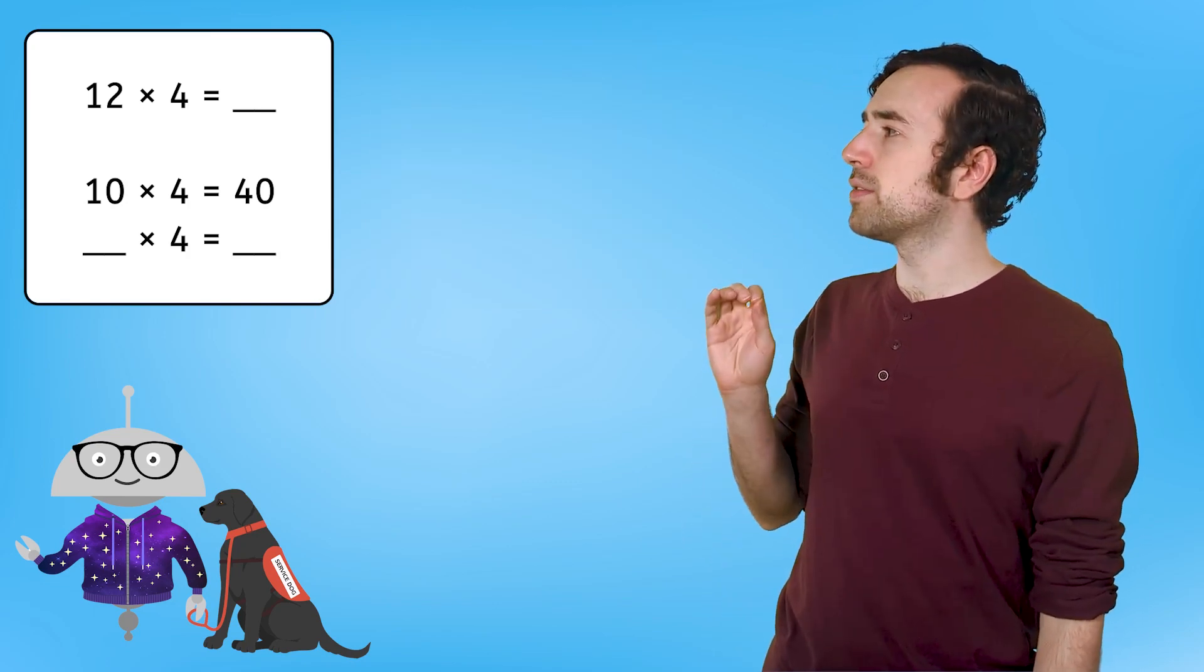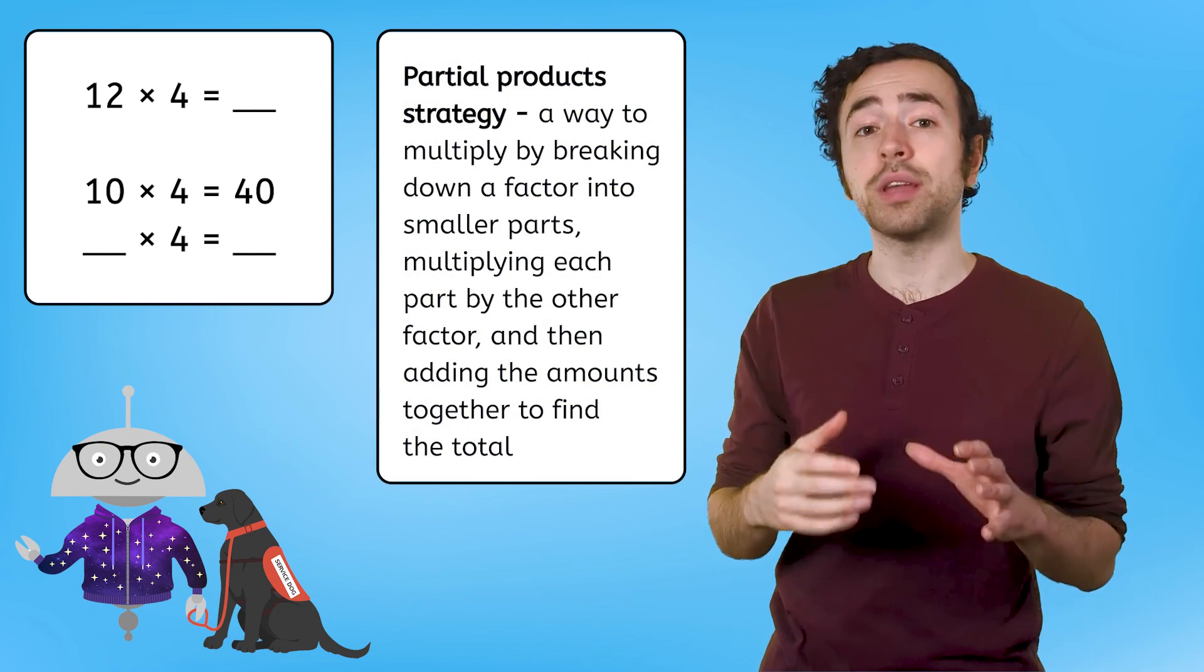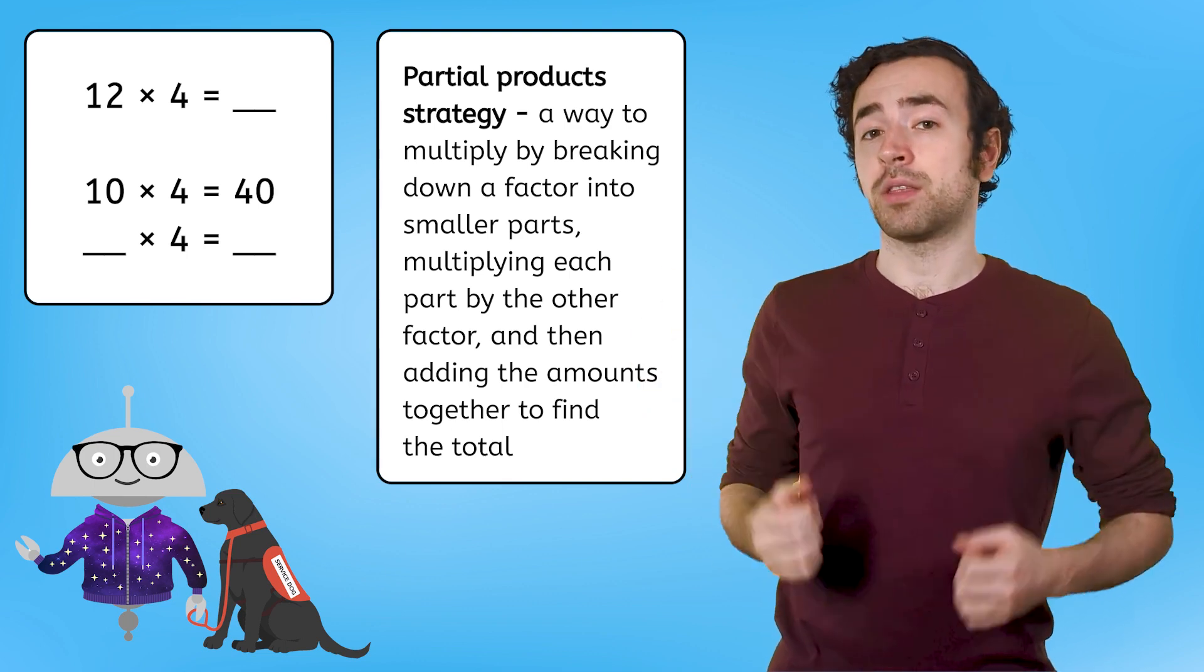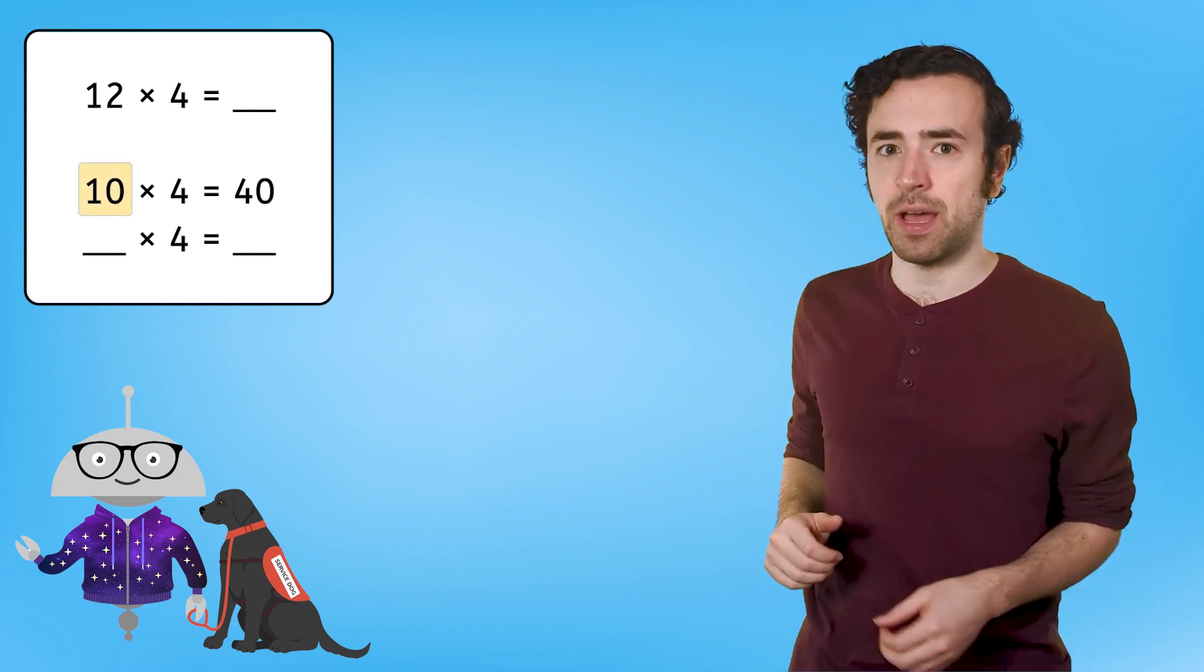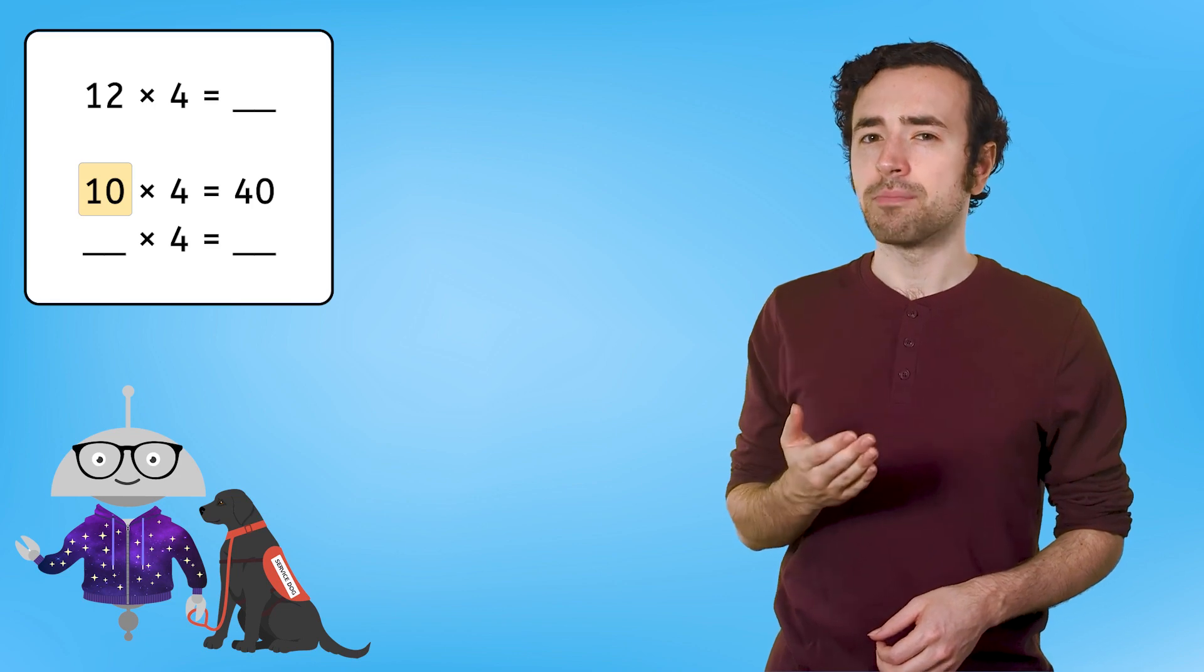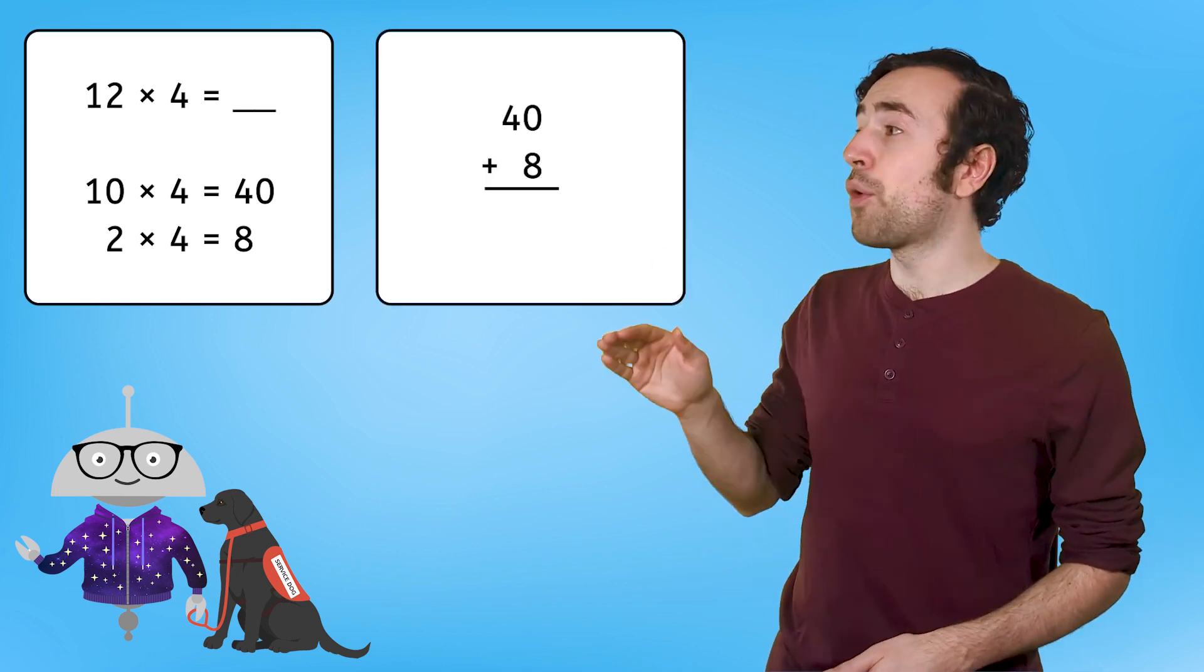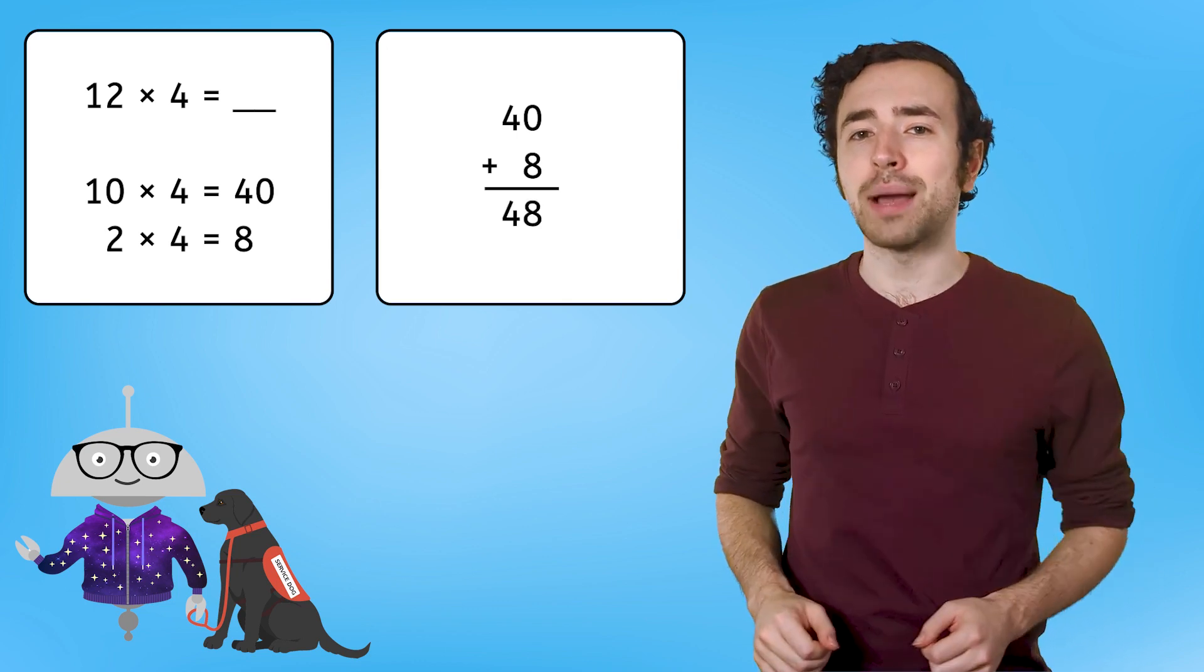Twyla started solving them using the Partial Product Strategy and wants us to finish them. Let's check out the first problem together. Remember, the Partial Product Strategy is a way to solve more complex multiplication problems by breaking down a factor into smaller parts, and then multiplying each part by the other factor. So, since Twyla multiplied 10 by 4, what else needs to be multiplied by 4? These amounts should add up to the factor you're breaking down. Since 10 plus 2 equals 12, that other piece must be a 2. And then, 2 times 4 equals 8. What do we do now that we have these partial products? Add them together to find the total. 40 plus 8 equals 48, which means 12 times 4 equals 48.